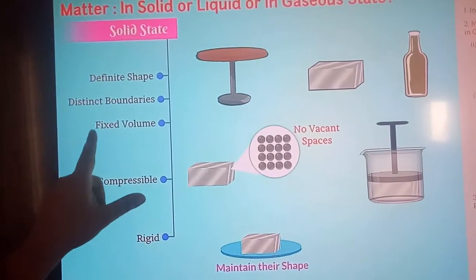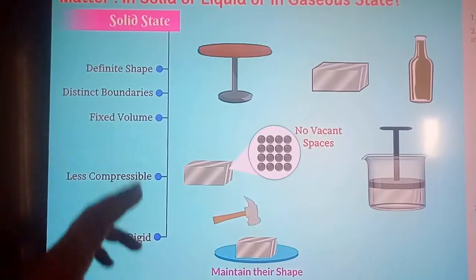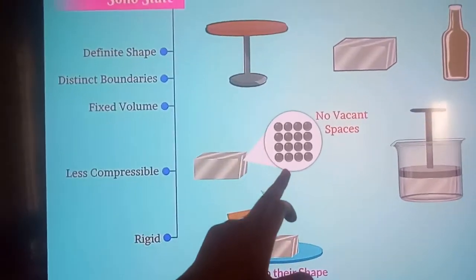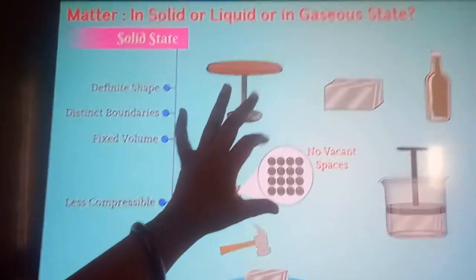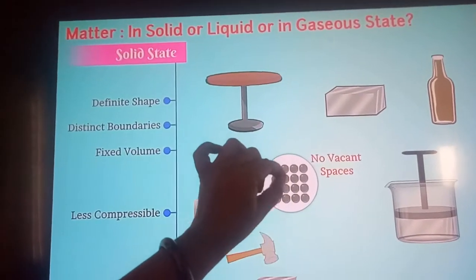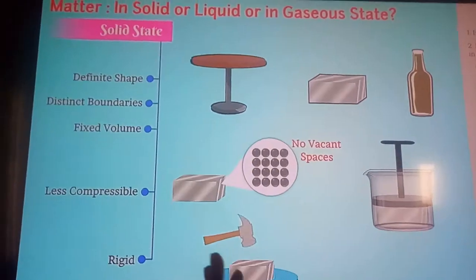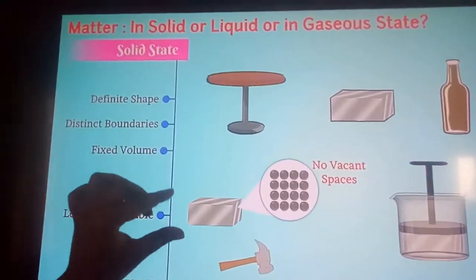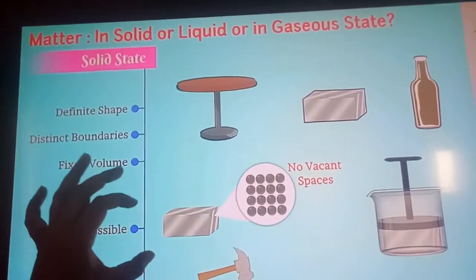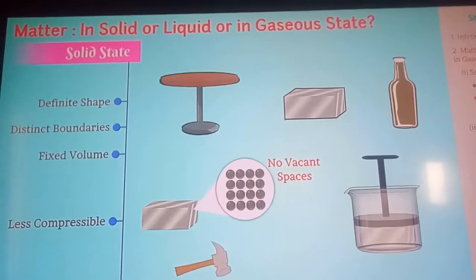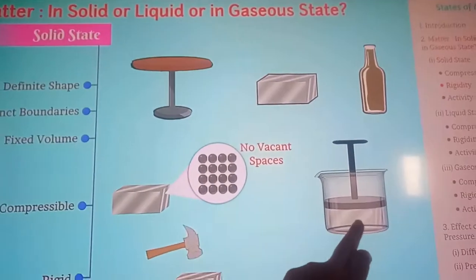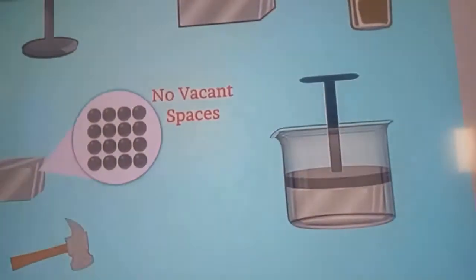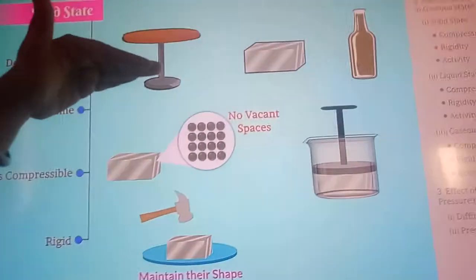The volume of a solid is also fixed. Solids are less compressible. Less compressible means that at the microscopic level, the space between the atoms is very, very less — no vacant spaces are present, no intercellular spaces are present. The particles of solid matter are very closely packed, so if you try to press a solid with a piston, it will not get compressed.